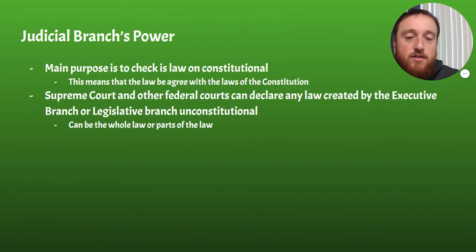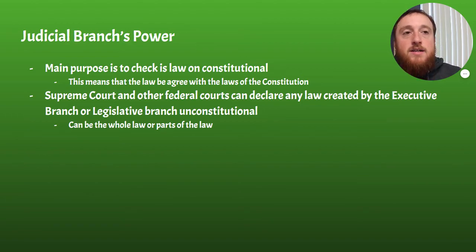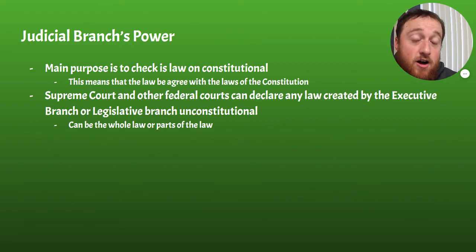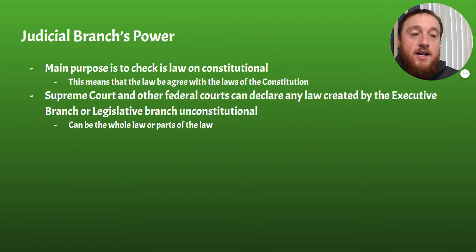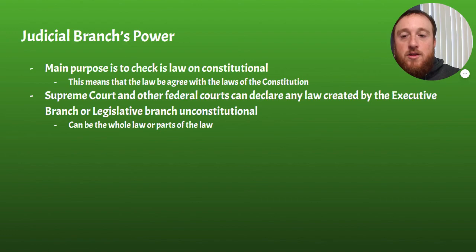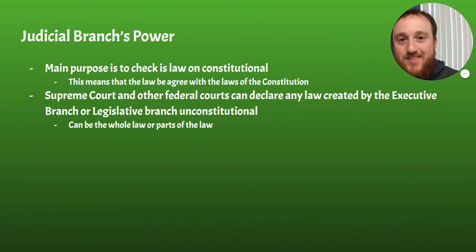So there you have it — those are the checks and balances between the three branches of government. Remember, Congress has a lot of checks over the other branches, but the executive branch has the power of the veto against Congress, and the judicial branch has the power to declare laws unconstitutional. Those are the checks and balances we see throughout our government. Hope this helped and you learned a little about how those three branches check one another.